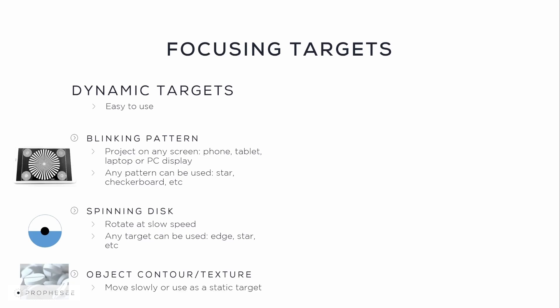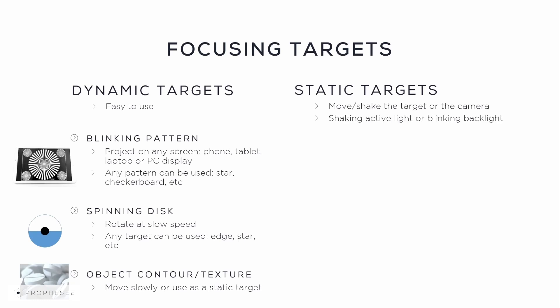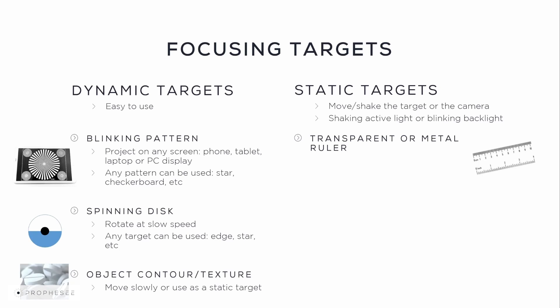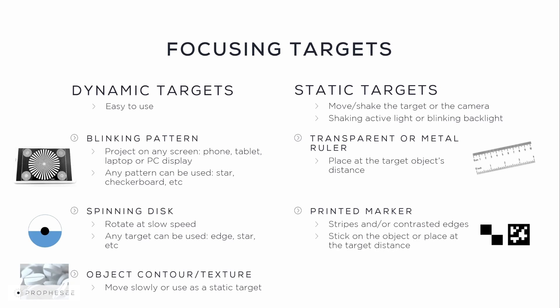If the object doesn't move, then use the target as a static target. Static targets can be used under some motion, for example by moving or shaking the camera or the object, or using a shaking active front light or blinking backlight. Among static targets, you can use a simple ruler — its advantage is having both edges and text, which are usually well contrasted. A transparent ruler is good to use with a backlight, and a metal ruler is better to use with an active front light. Alternatively, you can use a printed marker with contrasted edges or stripes, which is helpful if the target object doesn't have contrasted texture. Finally, if none of the earlier focusing targets is possible, then simply use any thin edge or small text, preferably with a good contrast.